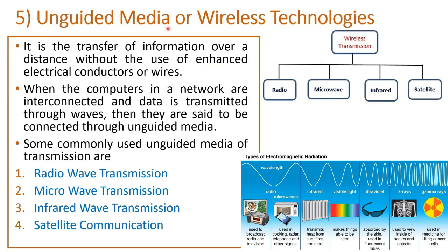Now let us understand unguided media or wireless technologies. Here we are not using any physical cable — we are using only certain waves, specifically electromagnetic radiations. It is a transfer of information over a distance without the use of electrical conductors or wires. When computers in the network are interconnected and data is transmitted through waves, they are said to be connected through unguided media — for example, Wi-Fi connections.